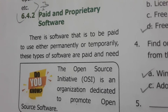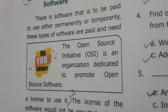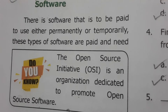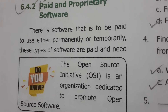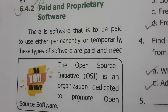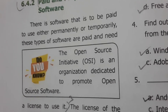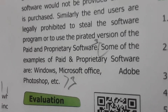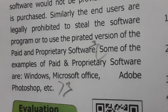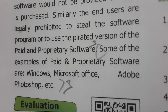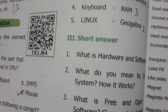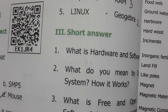Paid and proprietary software is software that must be paid to use, either permanently or temporarily, and requires a license to use. Some examples of paid and proprietary software are Windows, Microsoft Office, Adobe Photoshop, etc. This completes the book pack evaluations. Thanks for listening — do share with your friends and do subscribe.